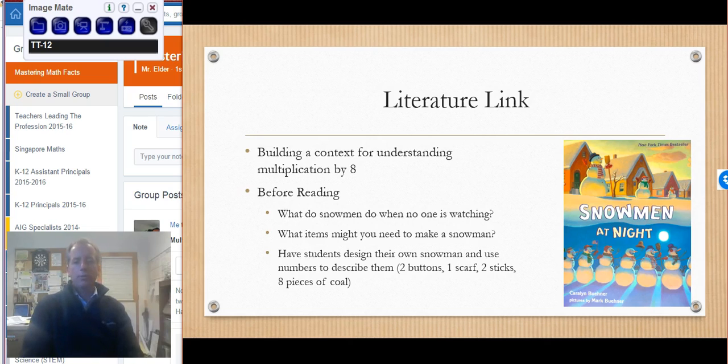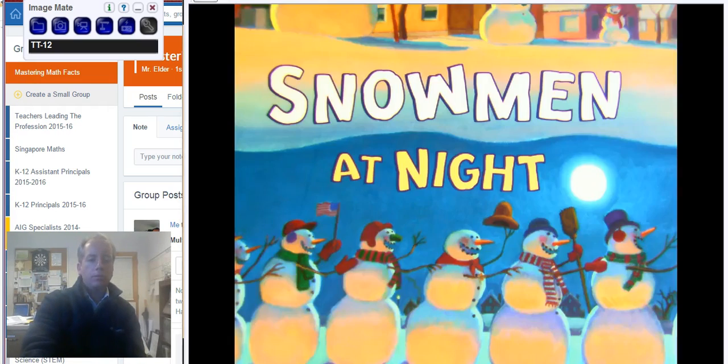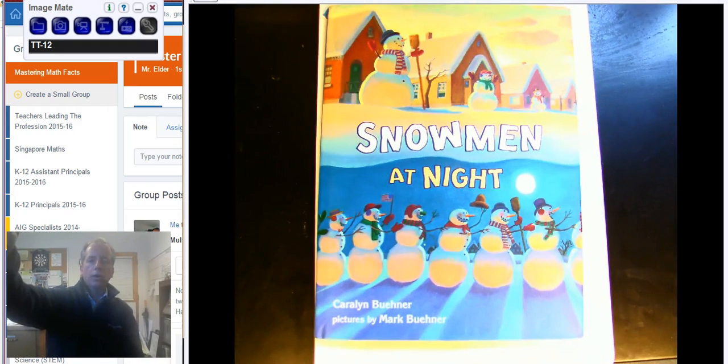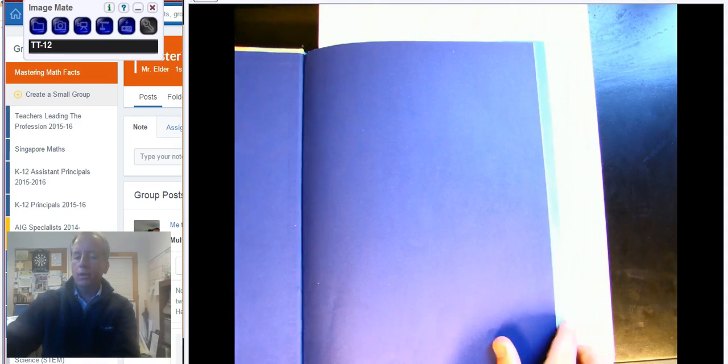Our text for the eights facts is Snowmen at Night. Hopefully this is a story that you've experienced before. If not, then I think you're in for a little bit of a treat, just kind of a funny story of what snowmen do when nobody is watching. As we look at this, we're going to have students design their own snowman and they're going to need to use numbers to describe them. So this could be one of those things you do as a pre-reading exercise that kids are going to design their snowmen. We're going to talk about how many things like buttons and scarves and pieces to make the nose and the mouth and the eyes and the arms, all those different things that are going to give us a variety of numbers to work with. We know as the teachers, we're going to use those later to say, what if I had three snowmen? What if I had five snowmen? So as we jump into our reading now, and we'll come back here to our after reading exercise in a second.